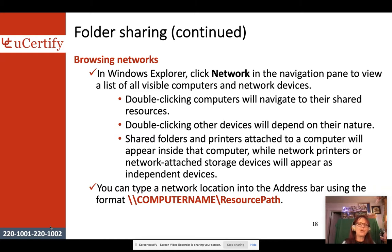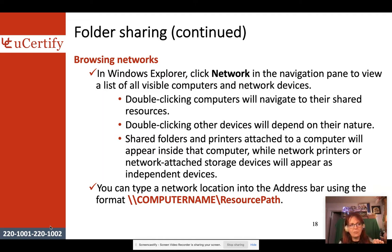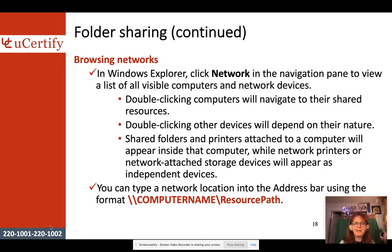In Windows Explorer, you can browse the network by clicking Network to see a list of all computers on your network. Double-clicking each computer navigates to anything they have shared. You may or may not have permission to access those shares — if it says 'no access' when you double-click, you have no access; if it opens but appears empty, it may be empty or you may lack permission.